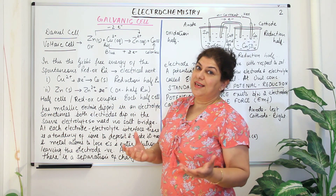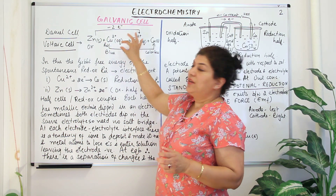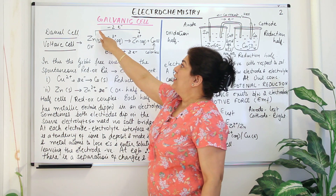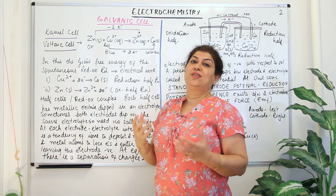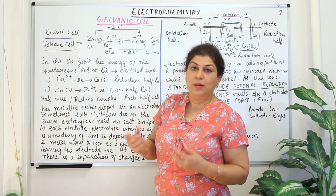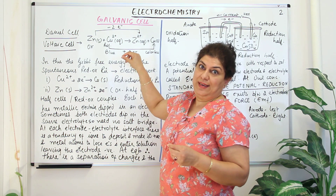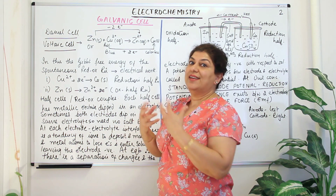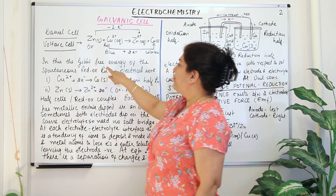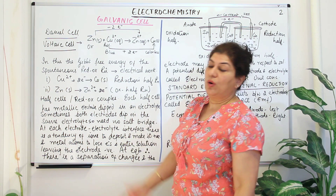The galvanic cell is also known as the Daniel cell or the voltaic cell. As I told you in the previous video, when you have a spontaneous redox reaction, the free energy which is available in the form of electrons is converted into electrical energy, and that electrical energy is used to run a motor, light up a bulb, or do any electrical work. This is the job of a galvanic cell — the Gibbs free energy of the spontaneous redox reaction is converted into electrical work.